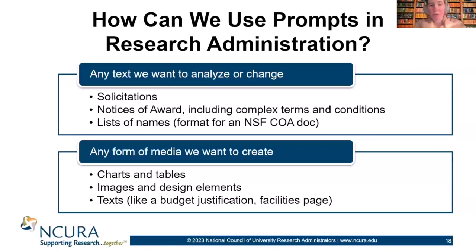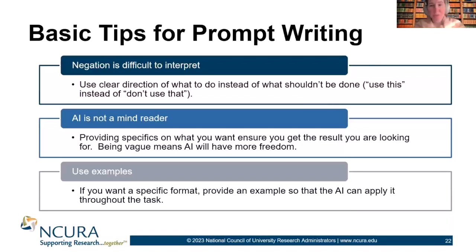The first way is with any text we want to analyze or change. That would include solicitations, notices of award including complex terms and conditions, lists of names — for example, to format for an NSF COA document. It can also include any form of media we want to create: charts and tables, images and design elements, and texts like a budget justification.